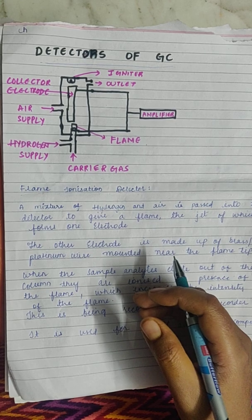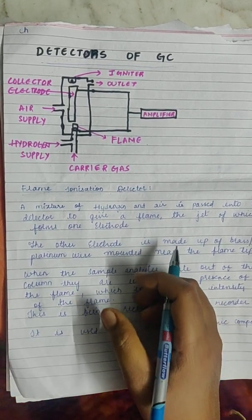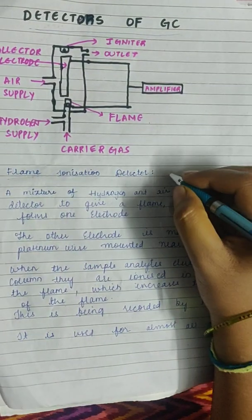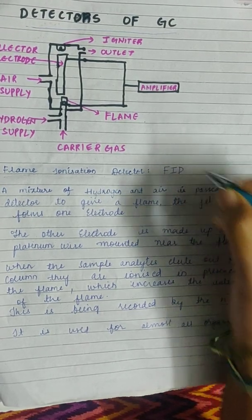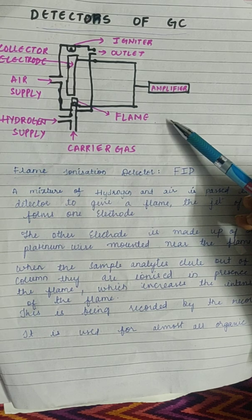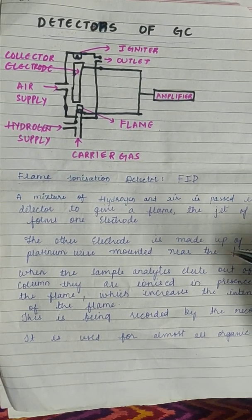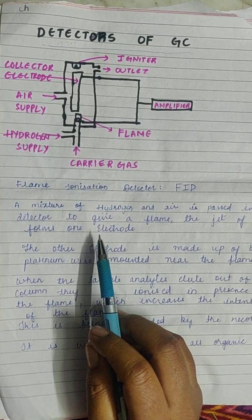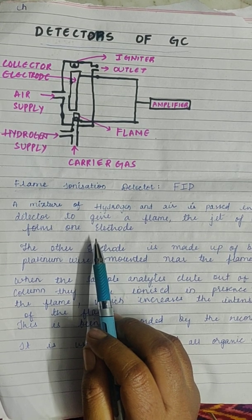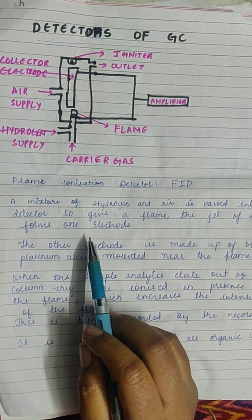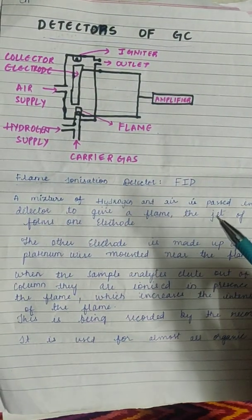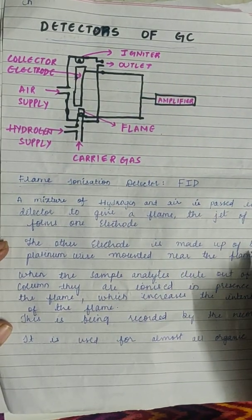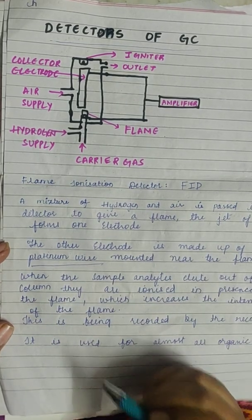Let us start with the flame ionization detector, also called FID. This is the diagrammatic representation of the flame ionization detector. A mixture of hydrogen and air is passed into the detector — hydrogen and air are mixed and passed to the detector — and here a flame is generated, acting as one electrode.